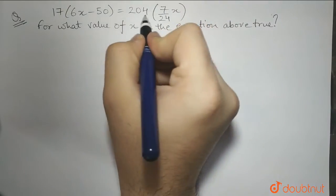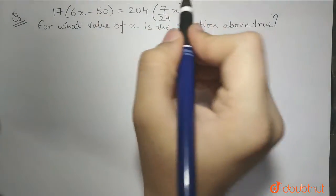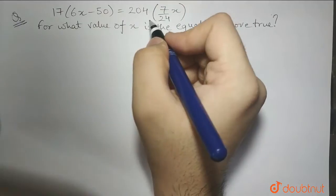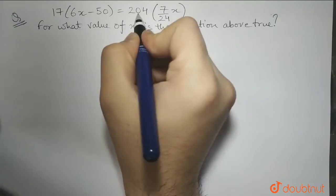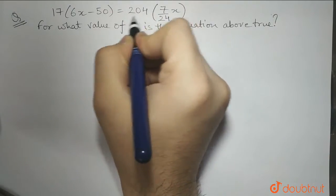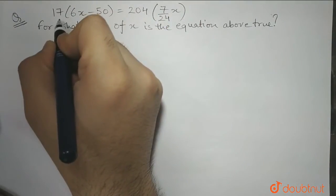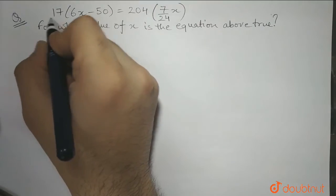so whenever we see such large numbers in any equation while solving it, we should try and observe that is this large number divisible by this number 17? These are hard numbers to play with.